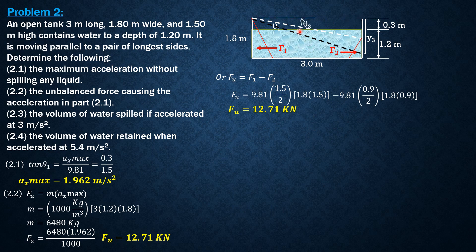I'll call this theta 3, the slope of this surface. Tangent theta 3 equals 3 meters per second squared over 9.81 equals Y3 over 3. So Y3 is 0.9174 as expected, which is less than 1.5.